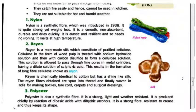Rayon is chemically identical to cotton but has a shine like silk. The rayon fibers are spun into thread and finely woven in India for making textiles, tire cord, carpet, and surgical dressing.